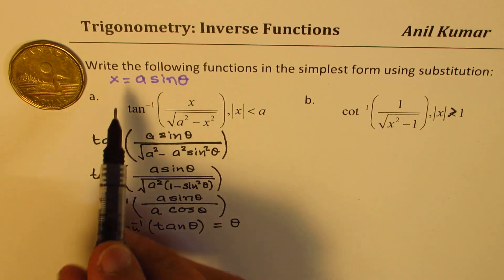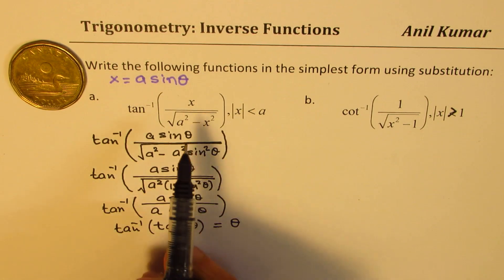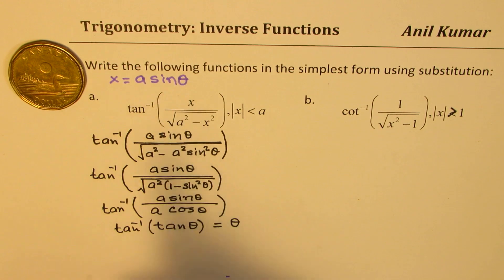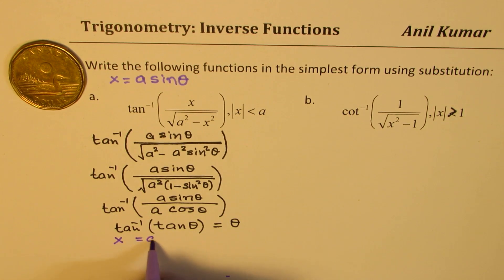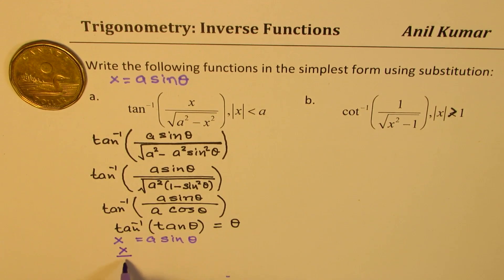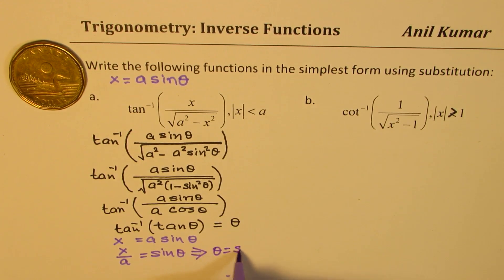We have to see what theta is. We had, let me go back to the substitution, a sin theta. Now I need to find what this theta is. Theta is x over a equals sin theta. And that implies that theta equals sin inverse of x over a.